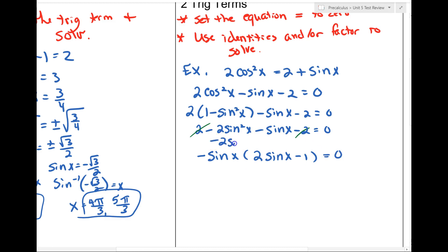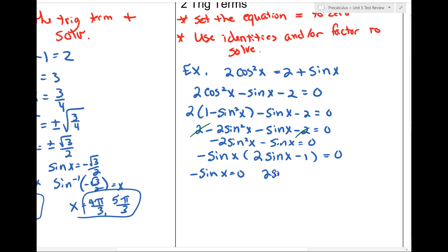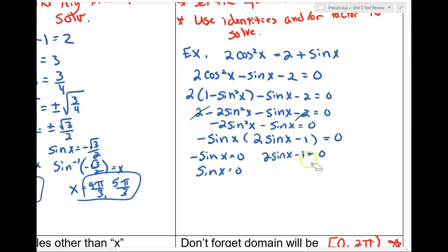You could rewrite that step explicitly if it helps — I'm a firm believer in showing more work if it helps you do it correctly. After factoring I have −sinx(2sinx − 1) = 0. Using the zero product property, we set each factor equal to zero: −sinx = 0, and 2sinx − 1 = 0. Dividing the first by −1 gives sinx = 0, which is satisfied at x = 0 and x = π.